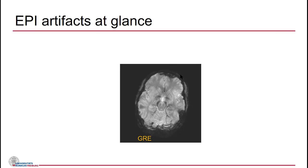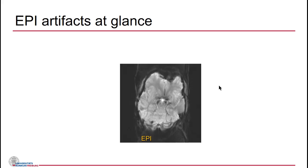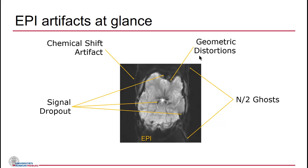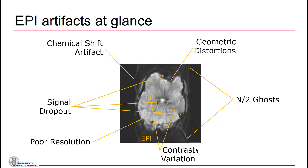Let's get familiar with what we're dealing with. Here is a gradient echo image and an echo planar image of the same subject — you see quite a bit of difference. You can notice signal dropout where signal is missing, geometric distortions where things are not located where you expect them, and chemical shift artifacts. The image resolution can also vary across locations. There are also finer differences related to contrast variation that are hard to notice by the naked eye.